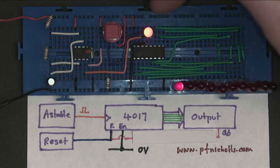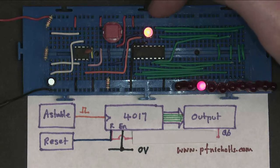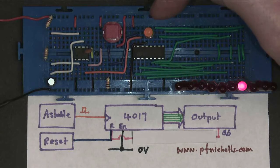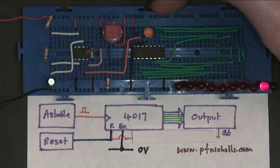So this output now is a square wave, which is one-tenth of the frequency of the original clock. So the 4017 is now acting as a divide-by-10 counter.